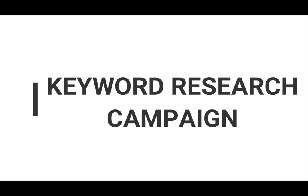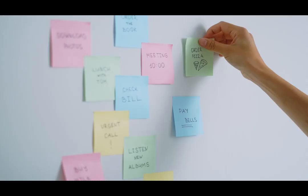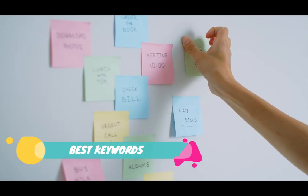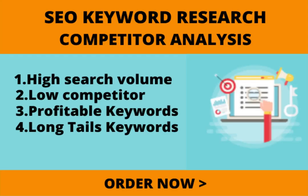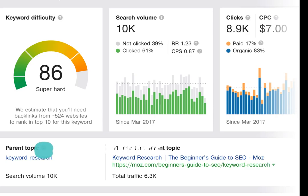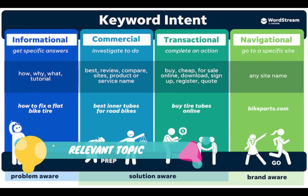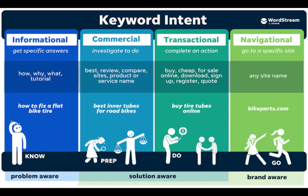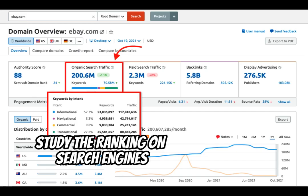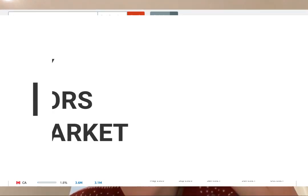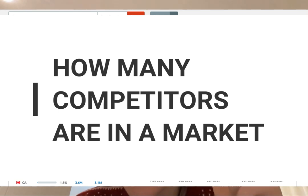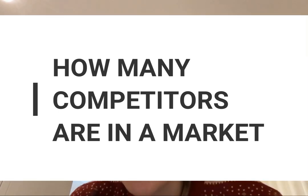Secondly, use keyword research. Why is this important? Because choosing the correct keywords will help you write about a relevant topic and use them in a natural way throughout all the content. It also helps you compare how many competitors there are in a market.